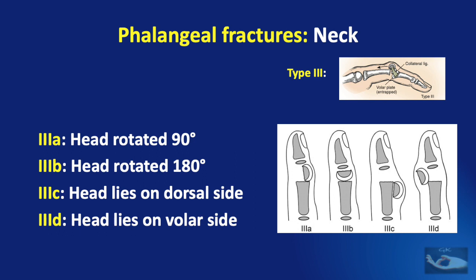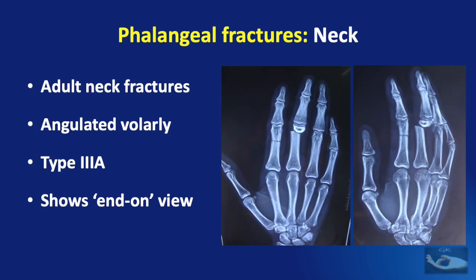Type 3b is said to occur when traction is applied to a Type 3a fracture — the space is increased and the fractured head, which has no soft tissue attachments except the collateral ligament, just rotates into that gap and turns itself 180 degrees. Though the pictorial representation is for the middle phalanx, it applies for the proximal phalanx also. Phalangeal neck fractures can also occur in adults, especially following machinery injuries; these fractures are angulated volarly, hence they can be something like Type 3a fractures.